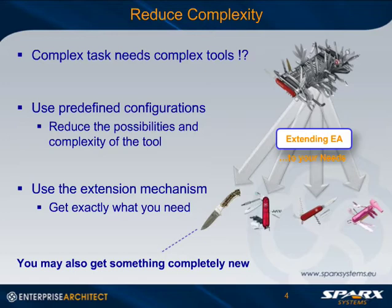When you start working with Enterprise Architect, you may be overwhelmed by all these possibilities — there is nearly a tool for everything you may want to do. But you can use the out-of-the-box configurations to reduce this complexity. For instance, you can turn off MDG technologies, select predefined workspace layouts, or reduce the menu entries.